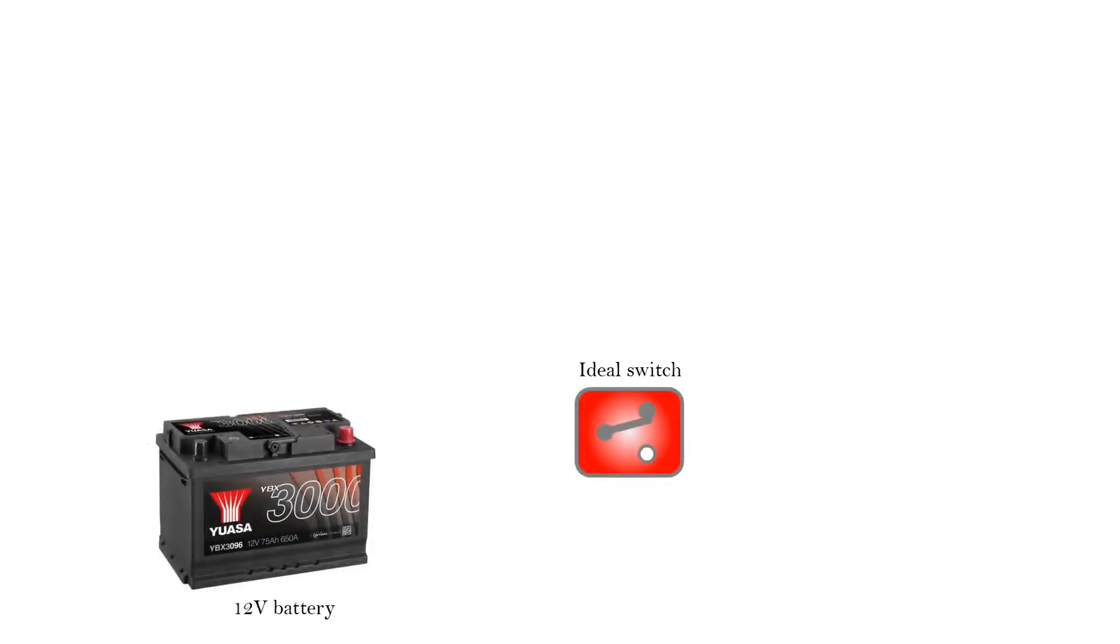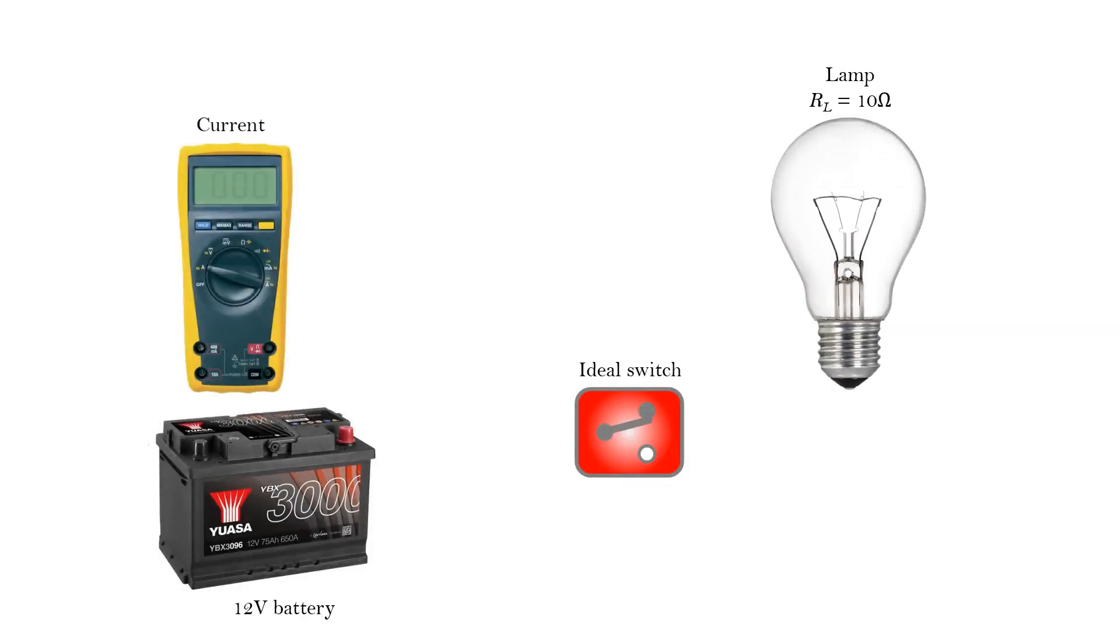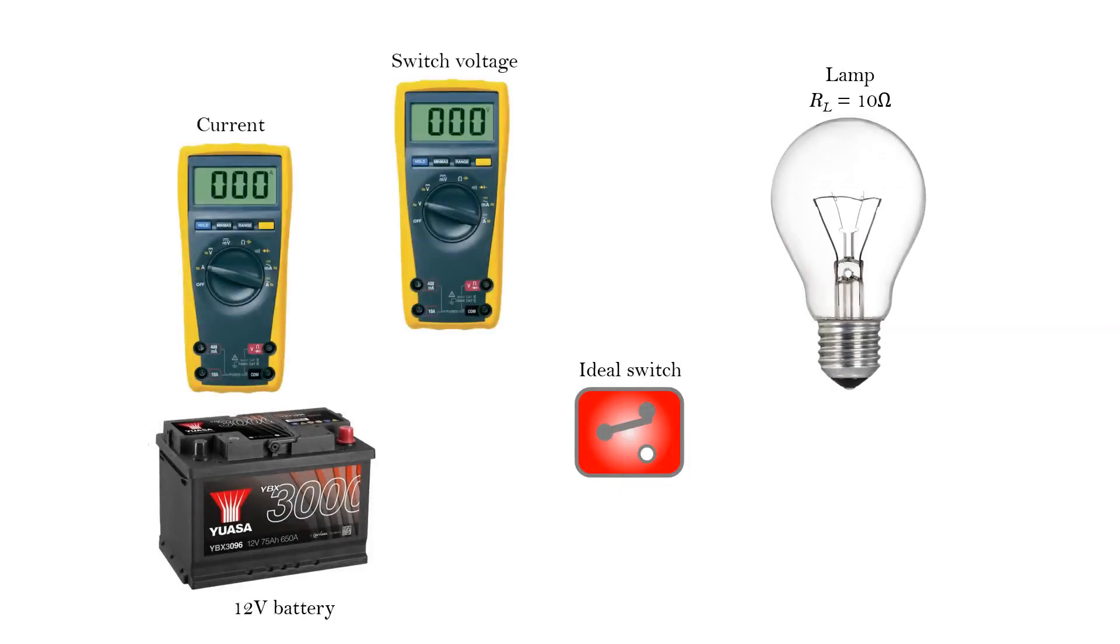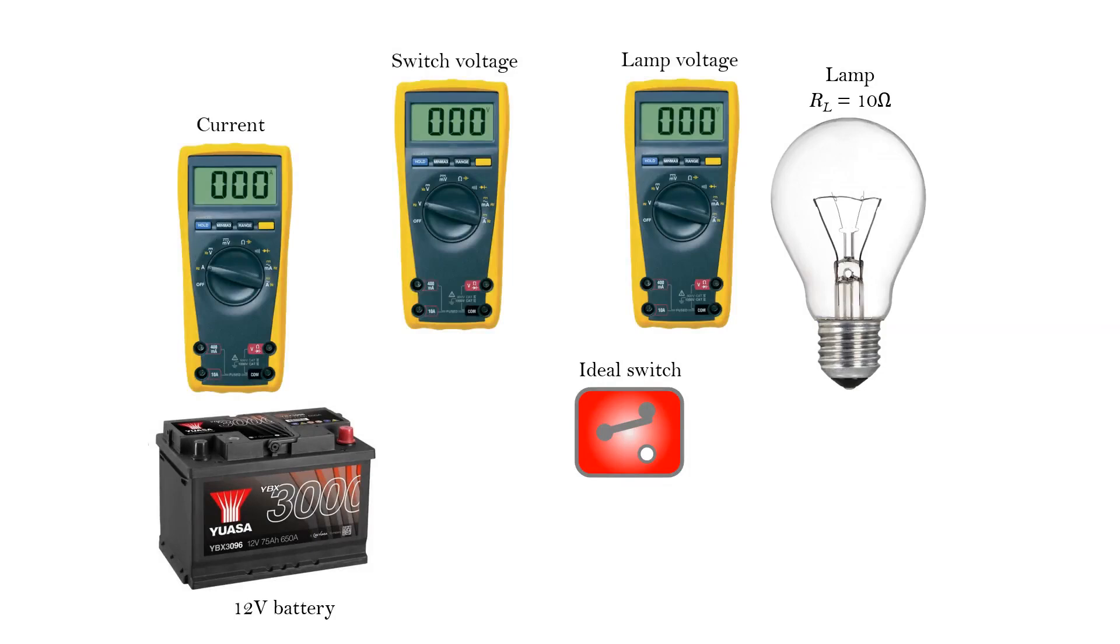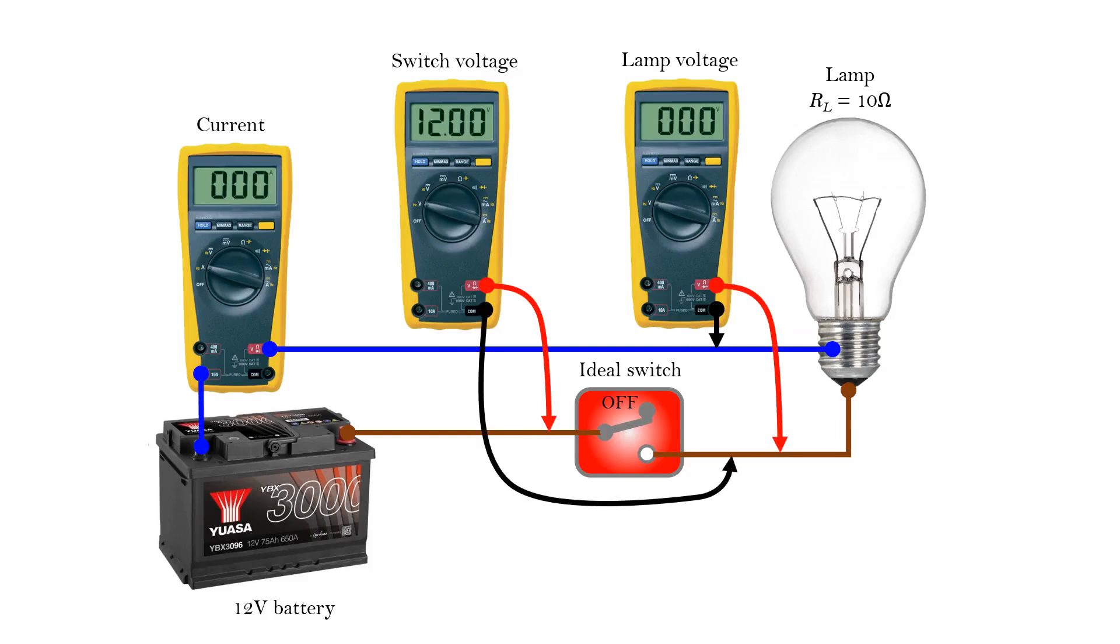A switch in the conducting or on state allows current to flow, while the voltage across its terminals is extremely small. Accordingly, in the blocking or off state, the current is practically zero and the voltage across the switch is high. Therefore, in power converters implemented with switches, the losses are insignificant.